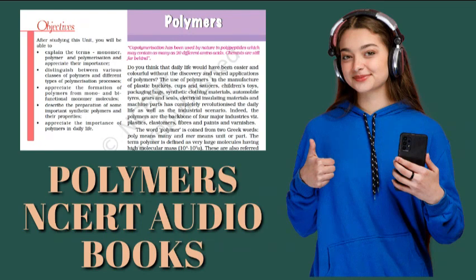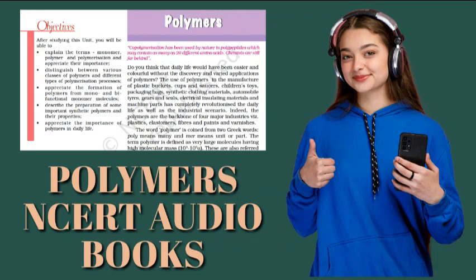Third, phenol formaldehyde polymer (i.e. bakelite and related polymers). Phenol formaldehyde polymers are the oldest synthetic polymers. These are obtained by the condensation reaction of phenol with formaldehyde in the presence of either an acid or a base catalyst. The reaction starts with the initial formation of ortho- and para-hydroxymethylphenol derivatives, which further react with phenol to form compounds having rings joined to each other through CH₂ groups. The initial product could be a linear product, Novolac, used in paints. Novolac on heating with formaldehyde undergoes cross-linking to form an insoluble solid mass called bakelite. It is used for making combs, phonograph records, electrical switches and handles of various utensils.